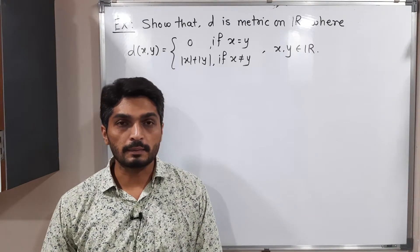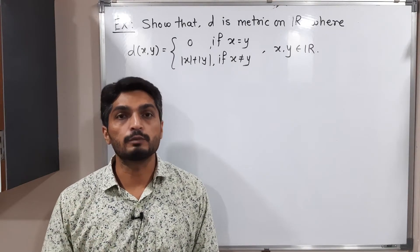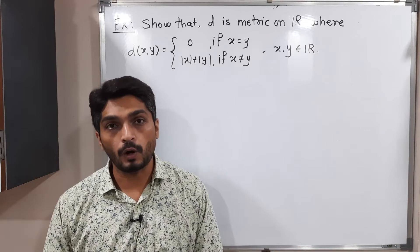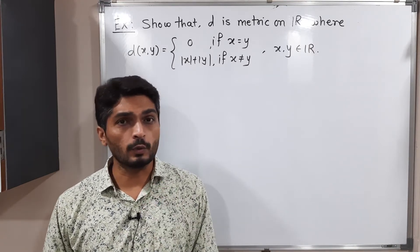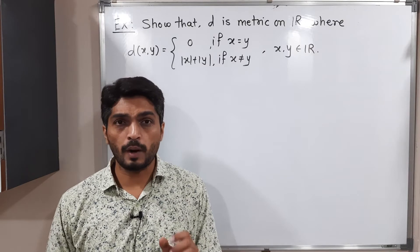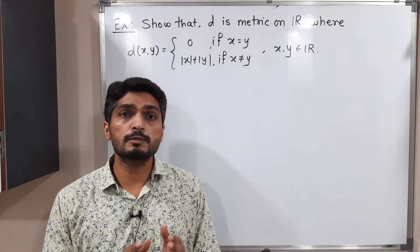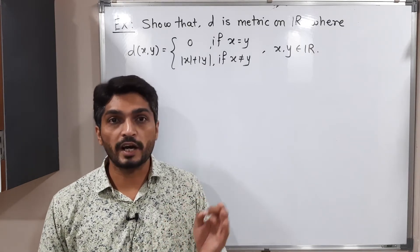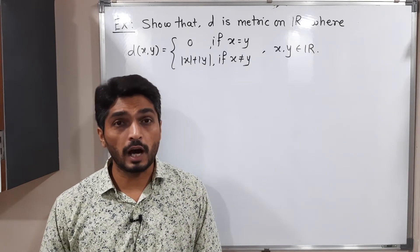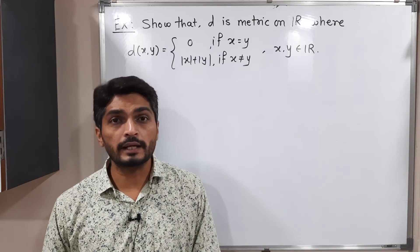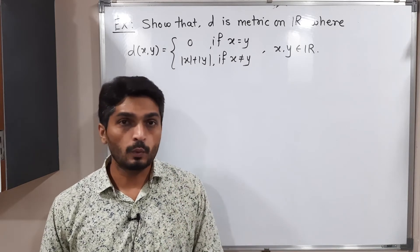Let us discuss this example. We have a function D defined on the set ℝ. Its value is 0 when X and Y are equal, and its value is |X| + |Y| when X and Y are different. We have to prove that D is a metric on ℝ — that means we have to prove that D satisfies all four conditions.